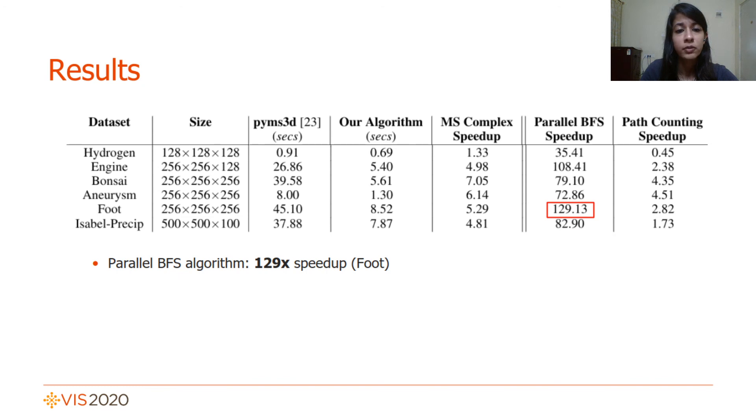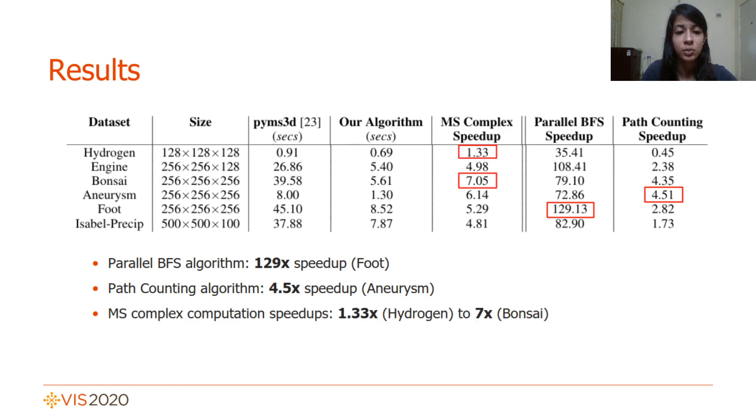We performed computational experiments on 9 popular datasets and mention some salient results here. Our BFS algorithm achieves speedups of up to 129x as seen in the dataset foot. The path counting algorithm performs better for larger datasets with the highest speedup of 4.5x as seen in aneurysm. We observe speedups ranging from 1.33 to 7x for the overall Morse-Smale complex computation.